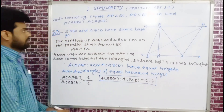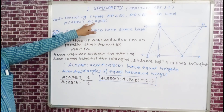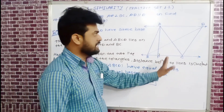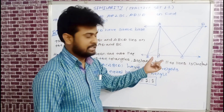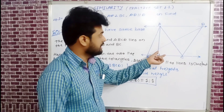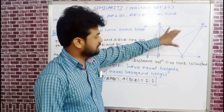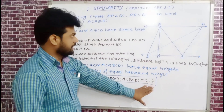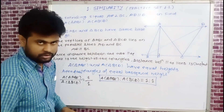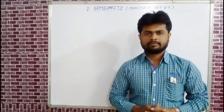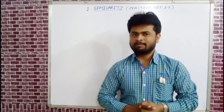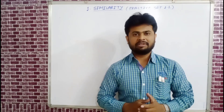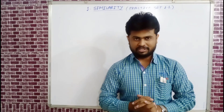That was Example 4. In triangles ABC and BCD, equal base and equal height means their areas are in the ratio 1:1. Please watch all examples, like and subscribe to the YouTube channel. Thank you.